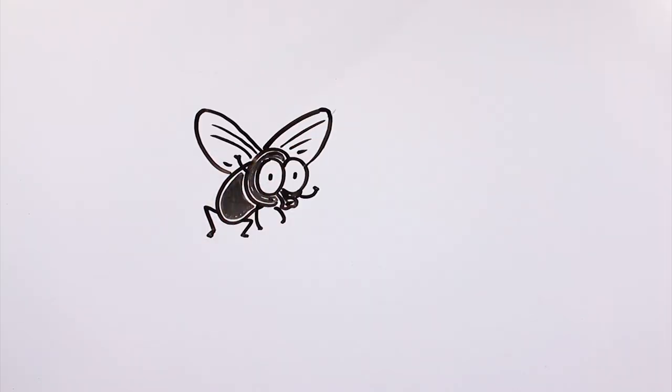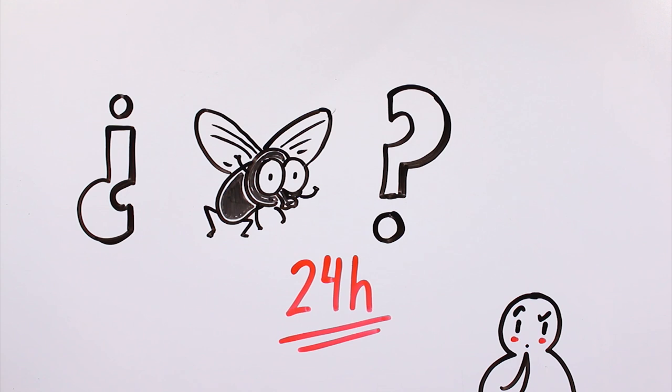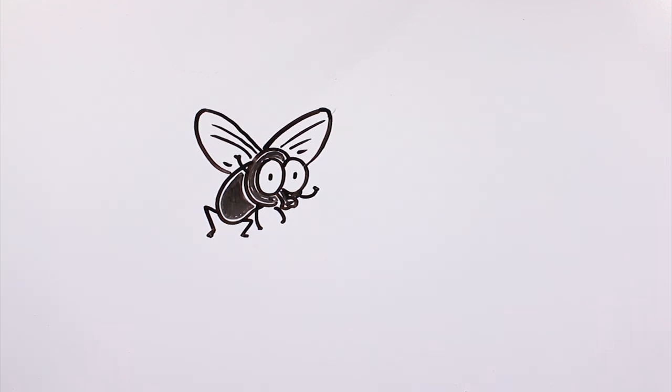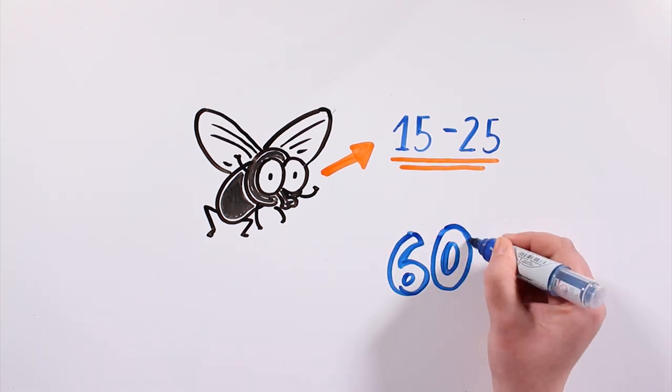Is it true that flies can only live for 24 hours? Actually, no. Houseflies live from 15 to 25 days, and under ideal conditions they can make it over 60 days.